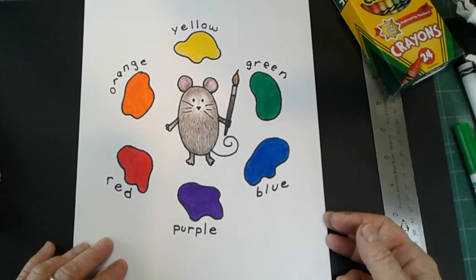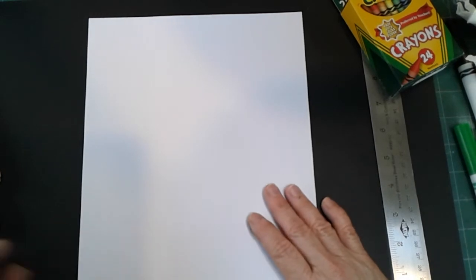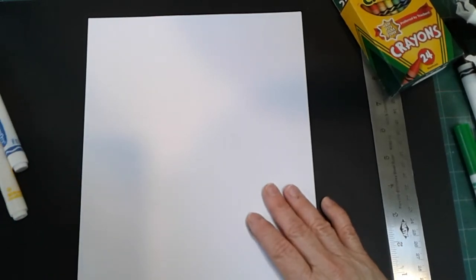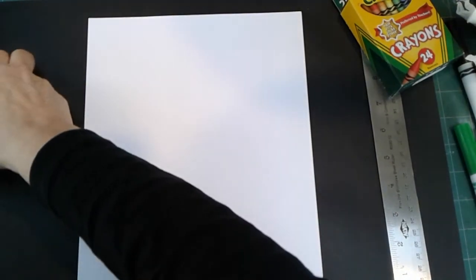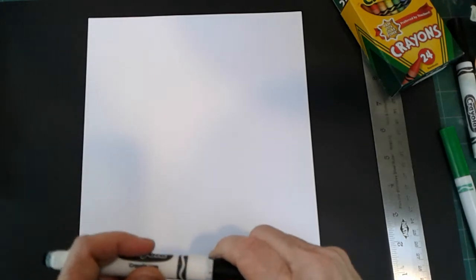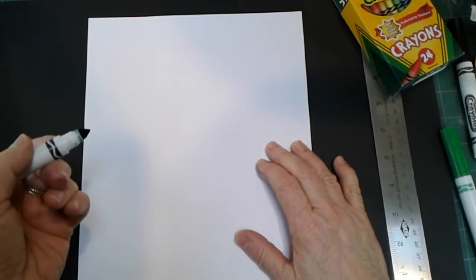So get your pencils, and let's get started. The first thing we want to draw is the mouse himself, and I'm going to use a marker for this because it's easier for you to see, but you're probably going to want to use a pencil so that you can erase any mistakes.